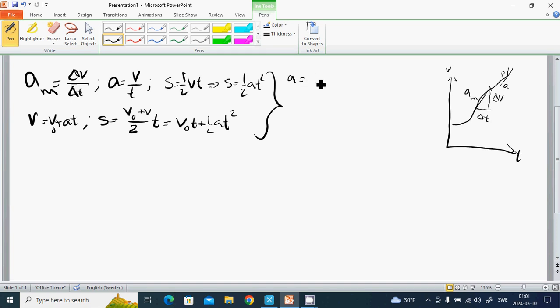a equals dV divided by dT, and V equals dS divided by dT. We can also write a as the limit of delta V over delta T as delta T approaches zero, and V as the limit of delta S over delta T as delta T approaches zero.